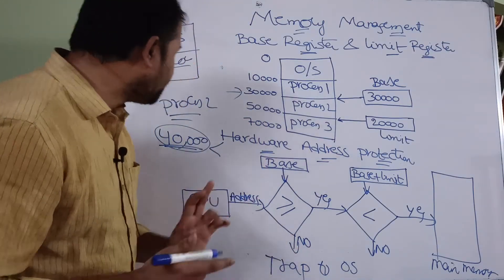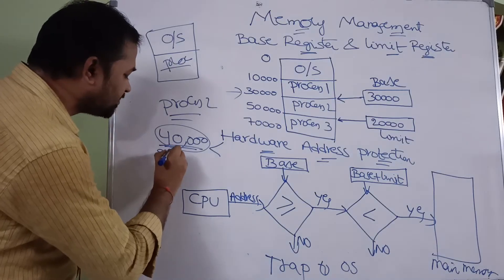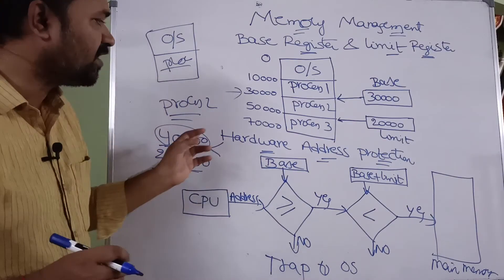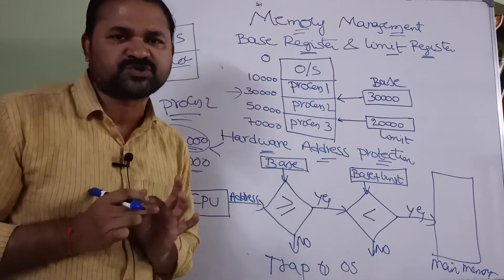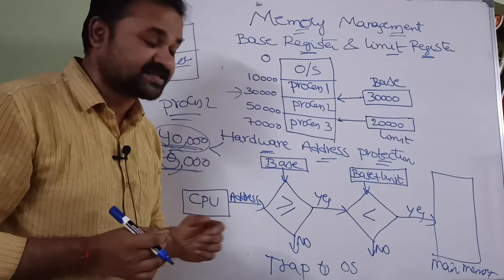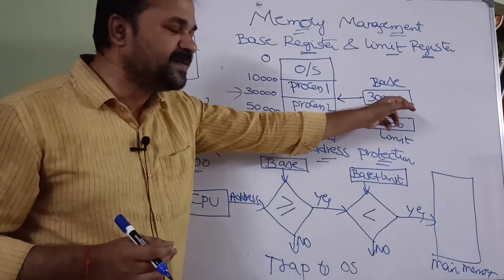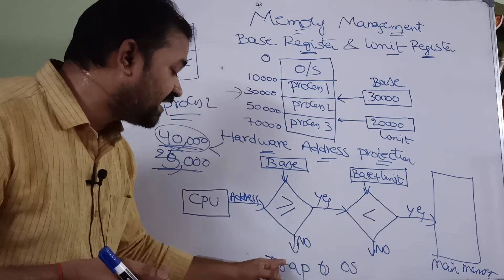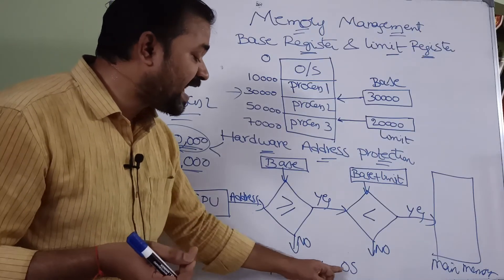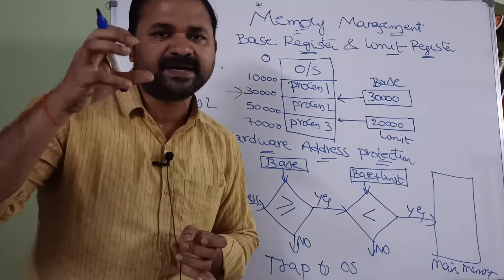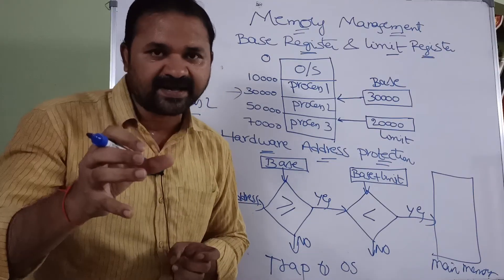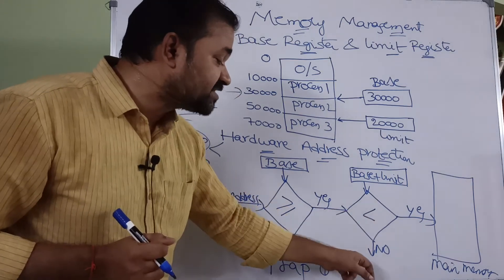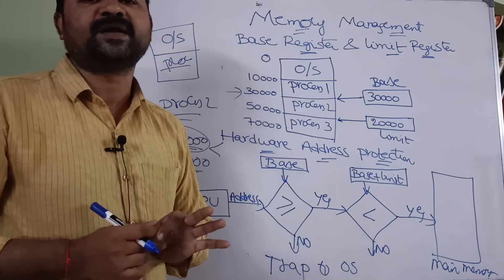If the condition is false, for example if the CPU generates an address of 25,000 while executing process 2, this address is compared with the base address of 30,000. Since 25,000 is not greater than 30,000, the condition is false. When the condition is false, a trap is generated and sent to the operating system. A trap is nothing but an error — a fatal error sent to the operating system.